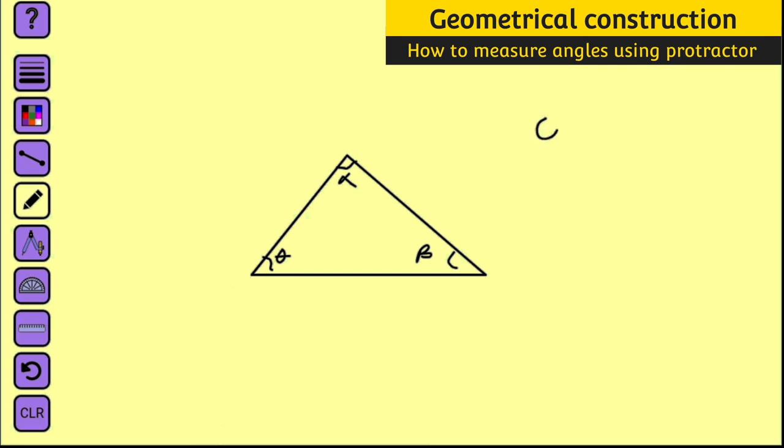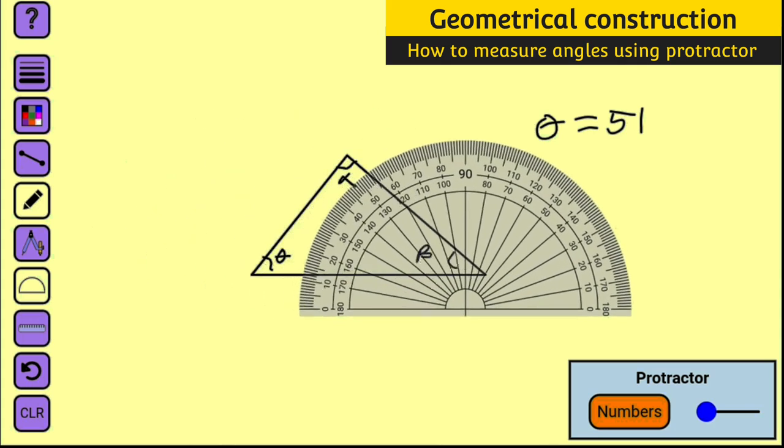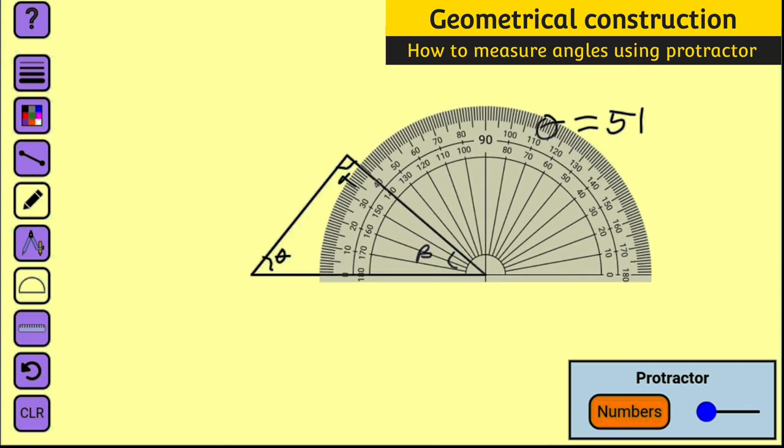Let us measure angle beta. Angle beta will be 10, 20, 30, and approximately 40. So it is 40 degrees. Beta is 40 degrees.